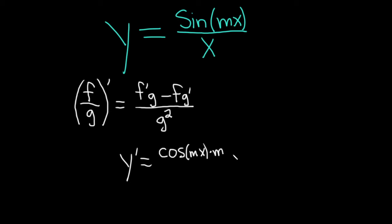Okay, just like if it was 2x, you would get 2. Same thing. So this is f prime, the derivative of the first. I'm just going to put it in parentheses to indicate that this is the first thing times the second, or the bottom rather, which is x minus the top. So sine mx